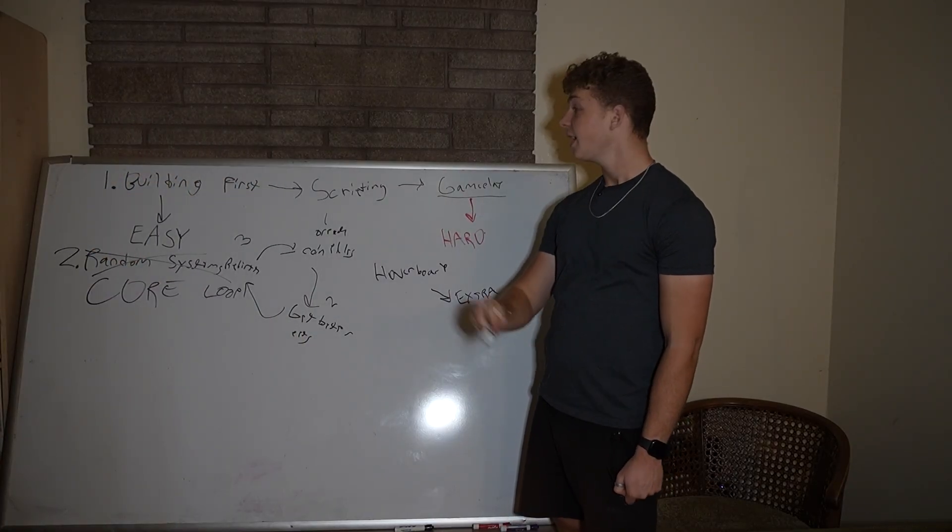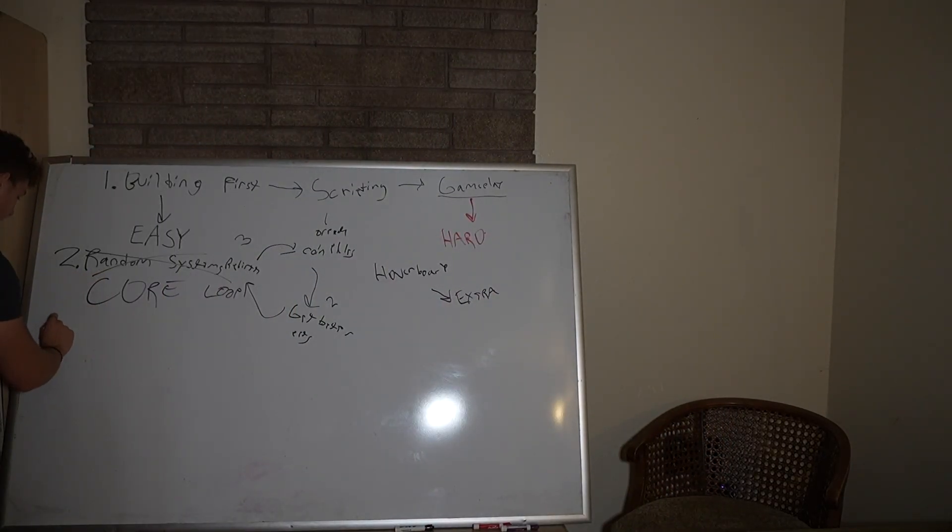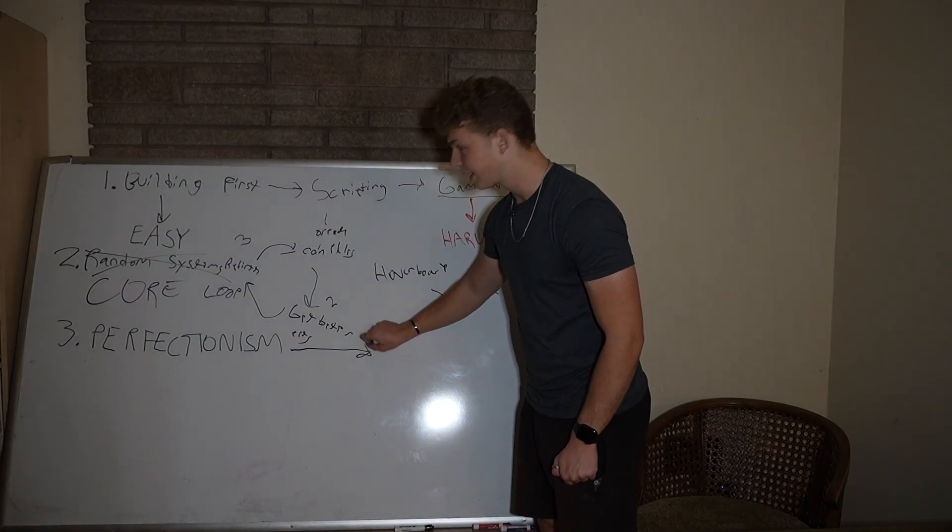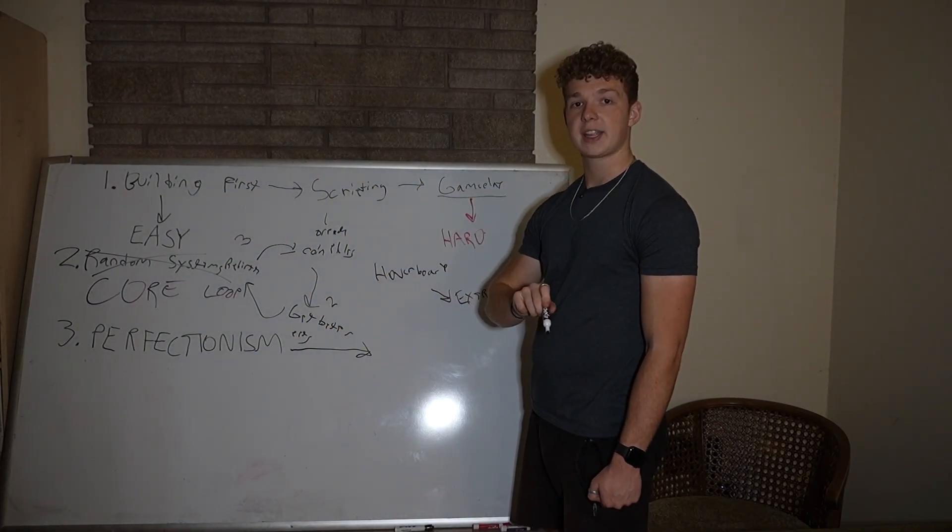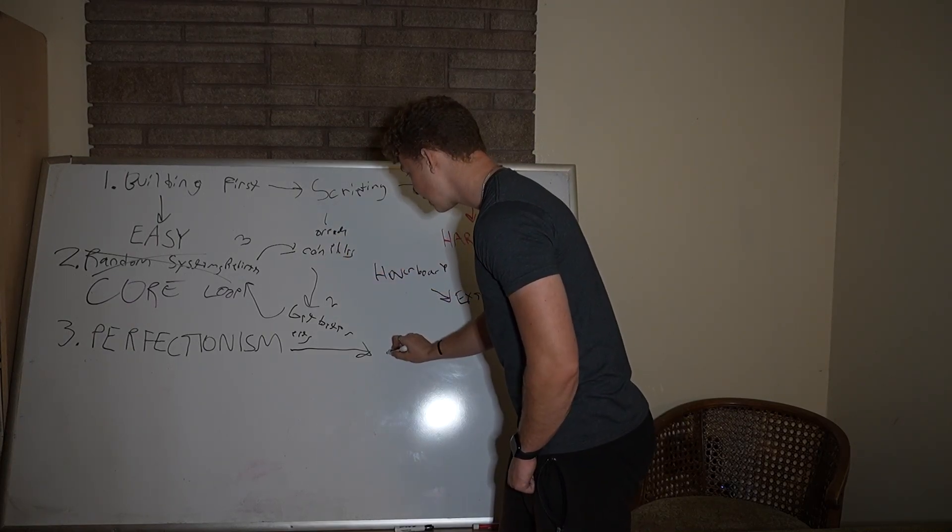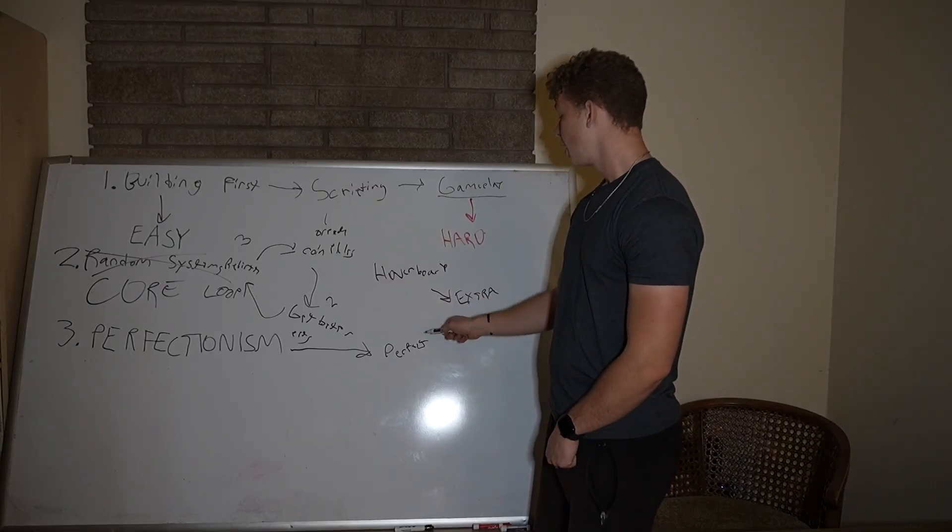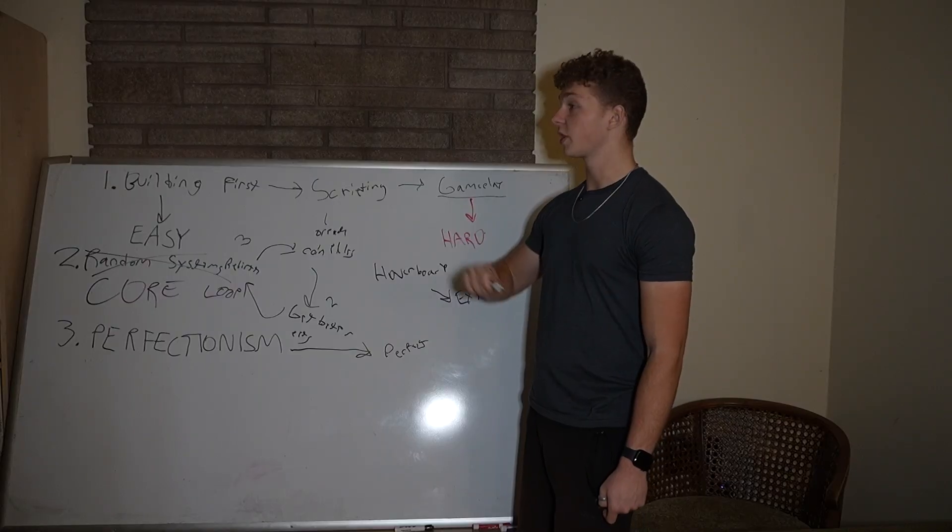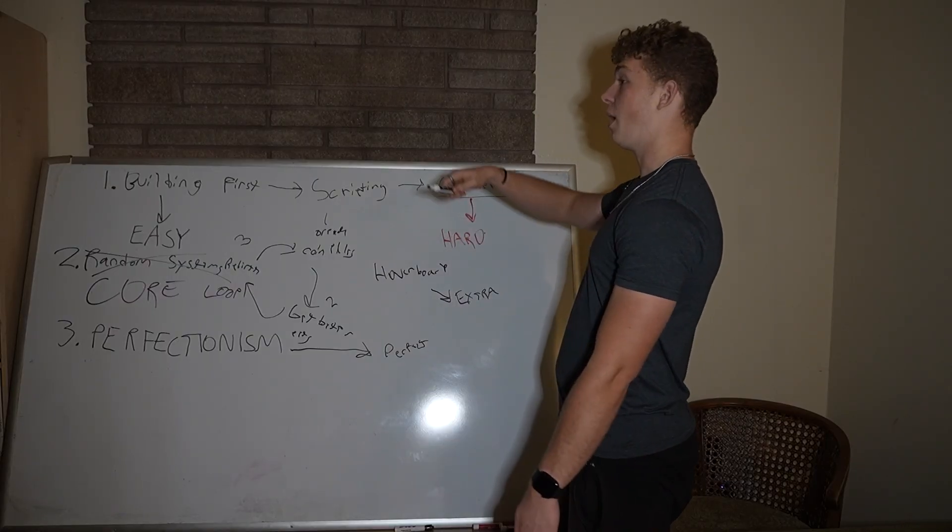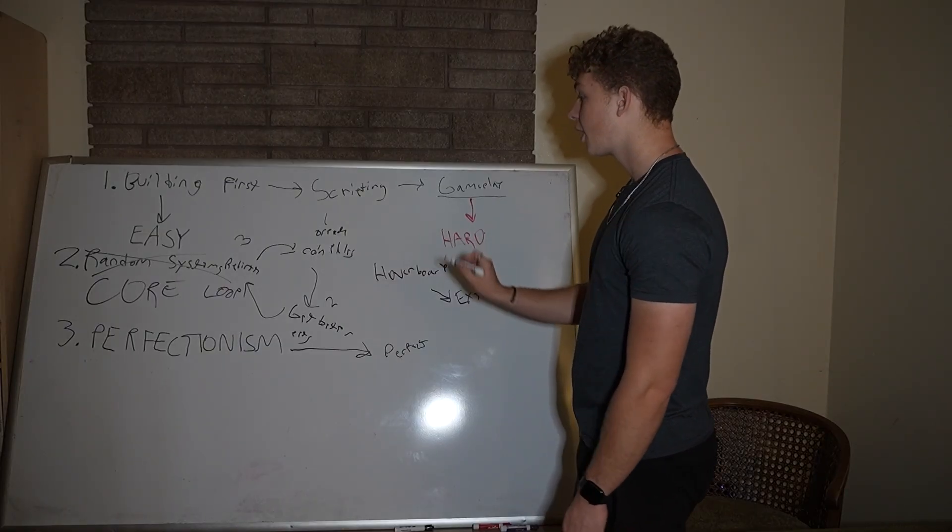Now the third mistake is perfectionism. So the third mistake that made my games take forever to get out is I thought they had to be perfect. But here's the problem. When you're trying to make a perfect project, like I was trying to make the best roleplay game ever with my dad. We were trying to make the next Brookhaven effectively. When you try to make that game, you're basically trying to hit an unattainable goal. At least when you're a new dev. Trying to make the next Jailbreak or the next Brookhaven or the next Royale High or the next Arsenal even is too high of a goal.